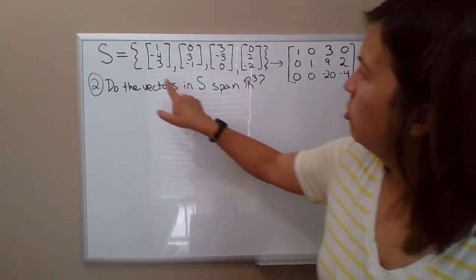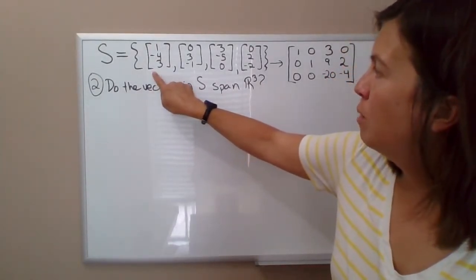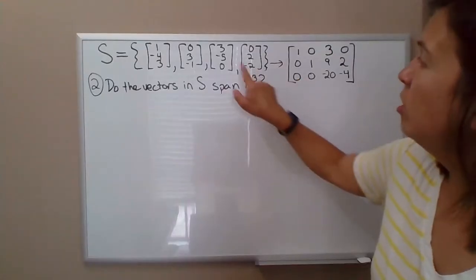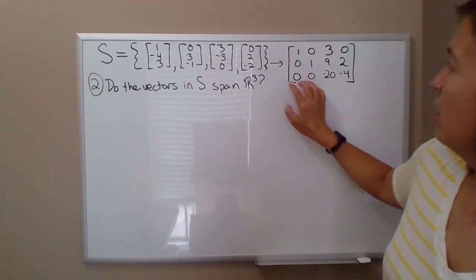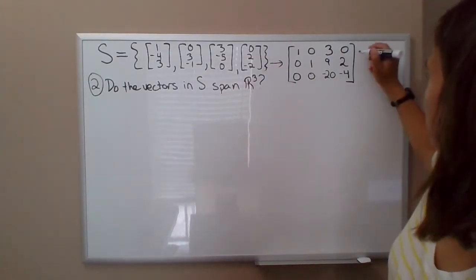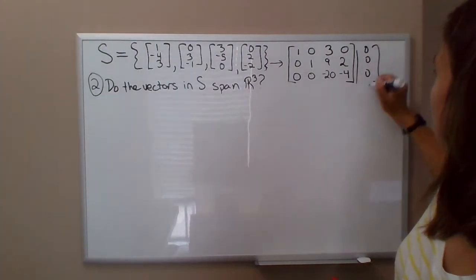The first way we approached it is we set up the equation: some scalar times this vector, some scalar times this vector, and so on, equals the zero vector. We row reduced it, looked like this, but augmented with the zero vector here.